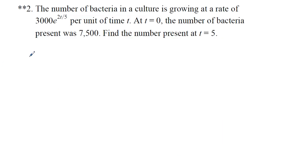Let's go look at our last problem. The number of bacteria in a culture is growing at a rate of 3,000 e to the power of 2t over 5 per unit of time t. At t equals 0, the number of bacteria present was 7,500. Find the number present at t equals 5. And 5 hours, 5 minutes, 5 seconds, we don't know. That's not necessary to know.